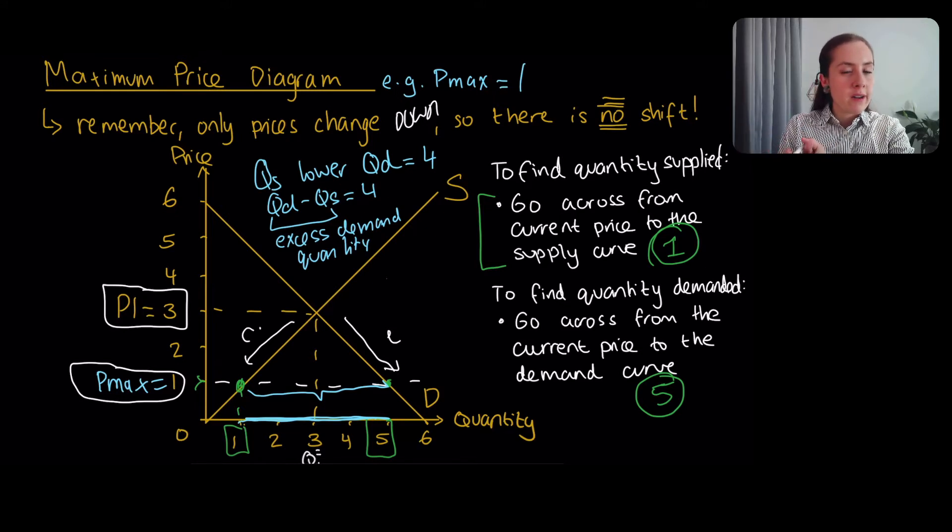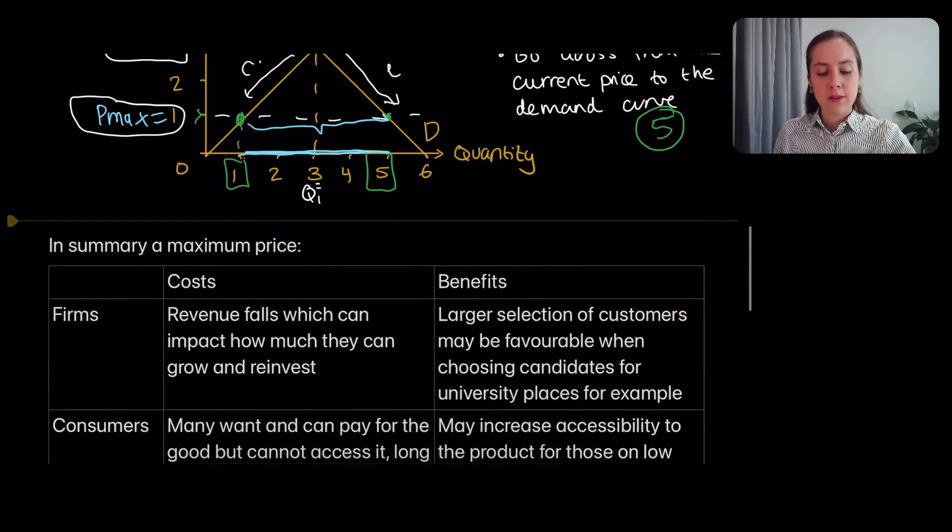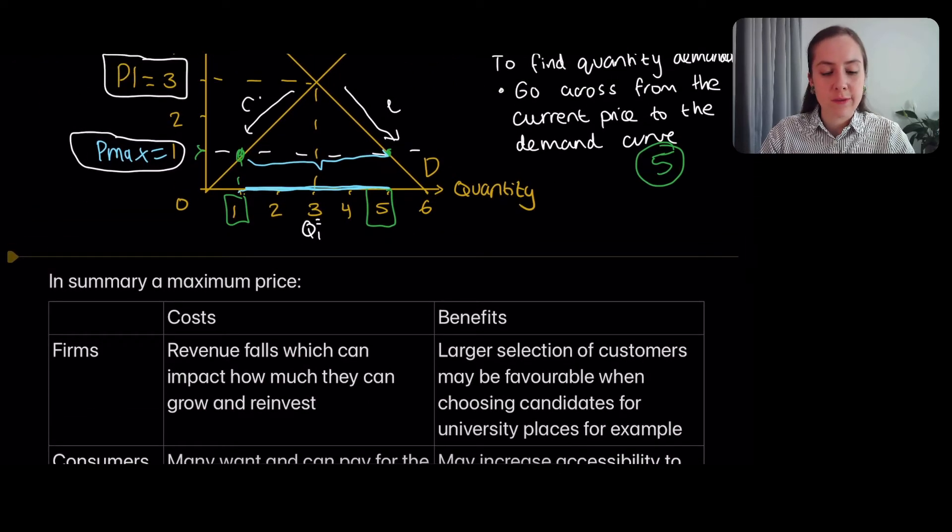People want 5 units, but they can only get 1 unit. So there's people that can't buy this product. So in terms of a summary, what's going to happen to firms? Firms face a problem.